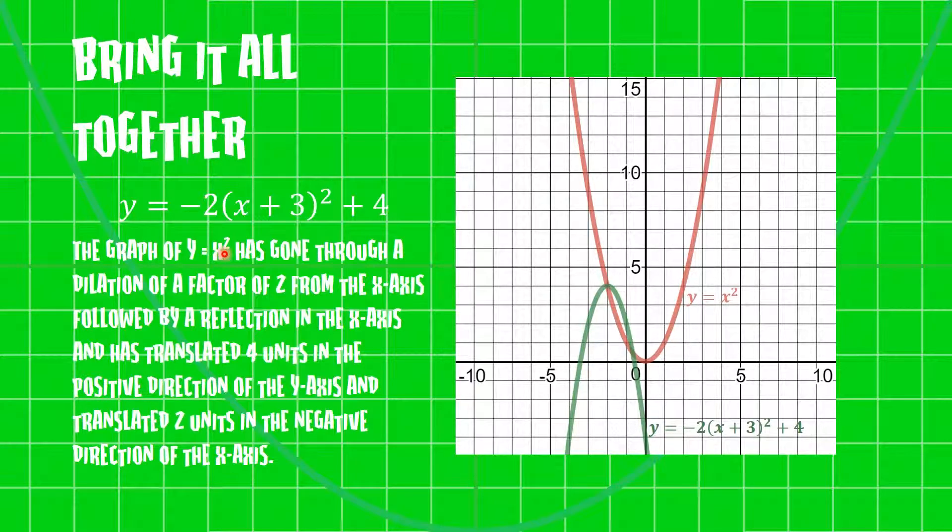Now we talk about the reflection. You can see that the a-value is negative in this case, so we write: followed by a reflection in the x-axis.